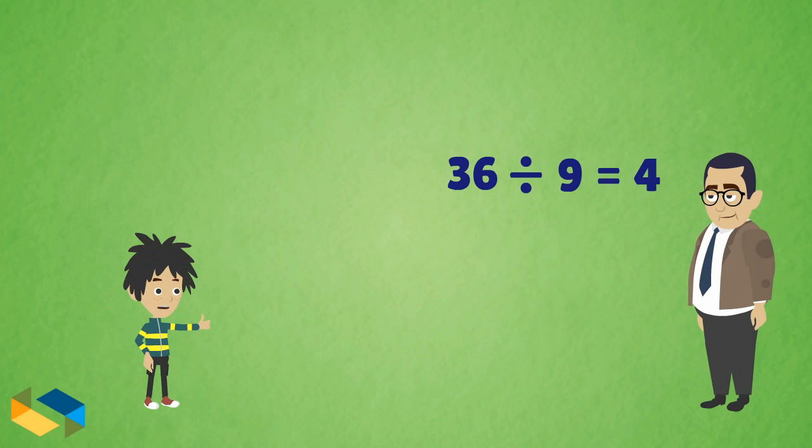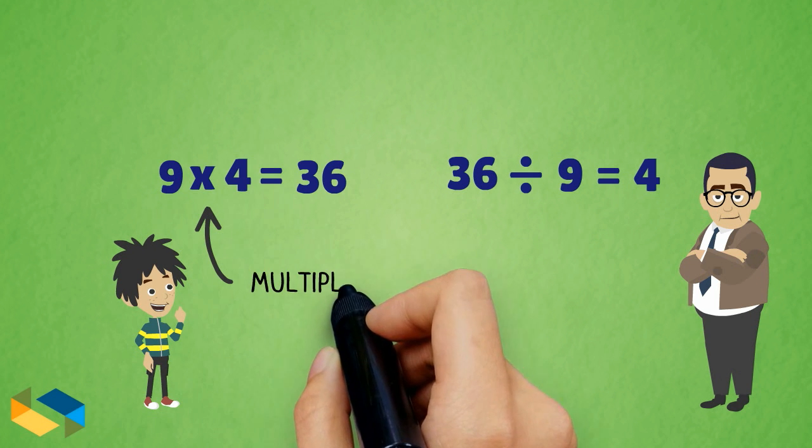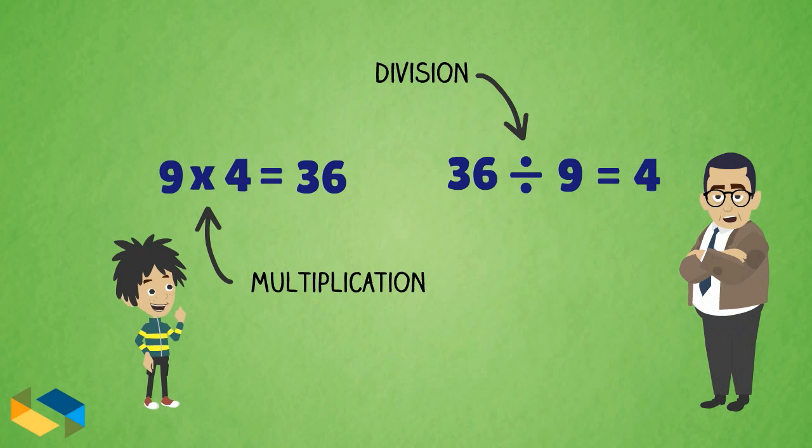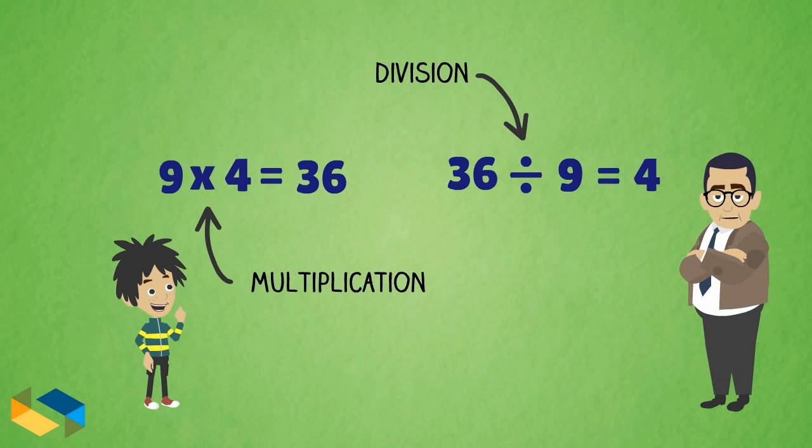Got it, Mr. Roy. Can you explain what happens if we divide 36 by 0? Good question. We had earlier seen the relationship between multiplication and division.